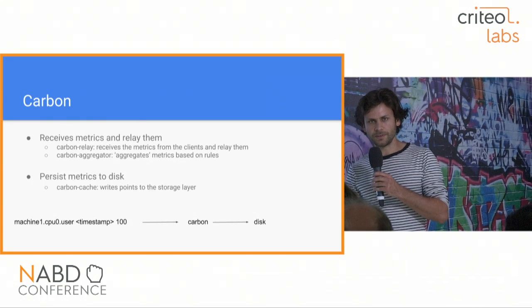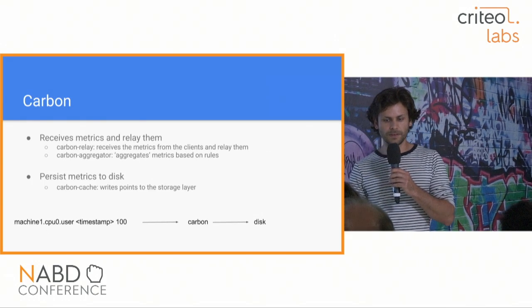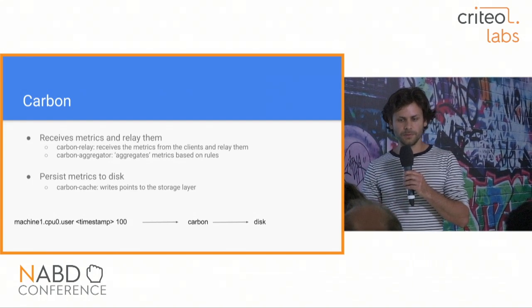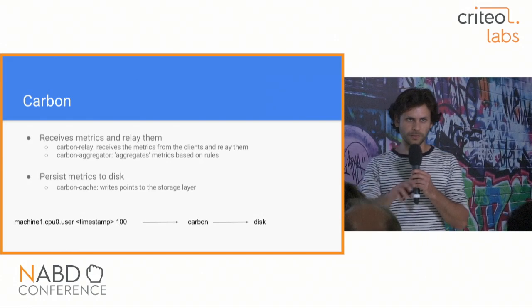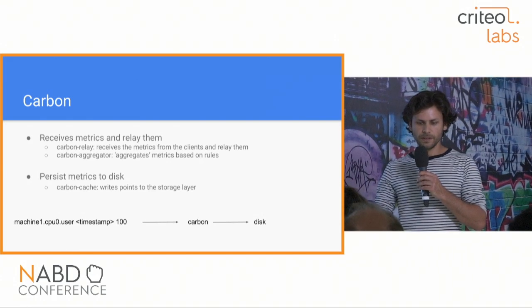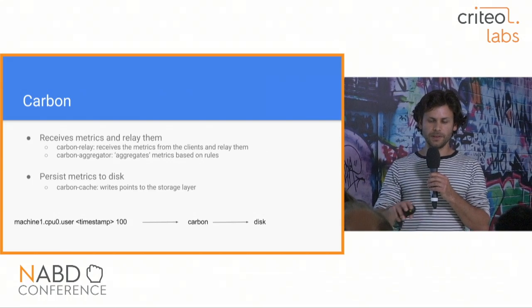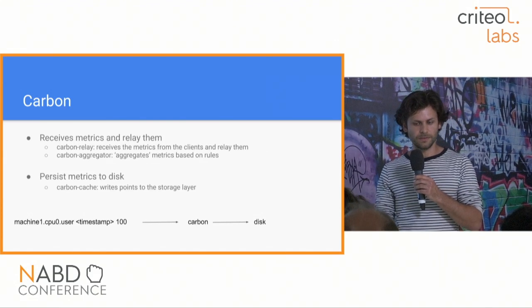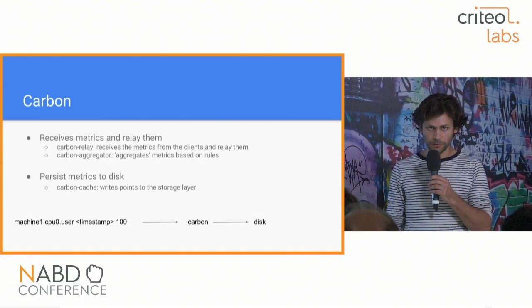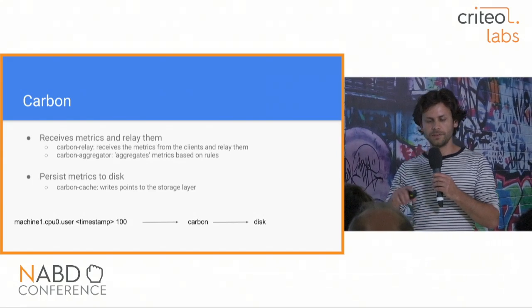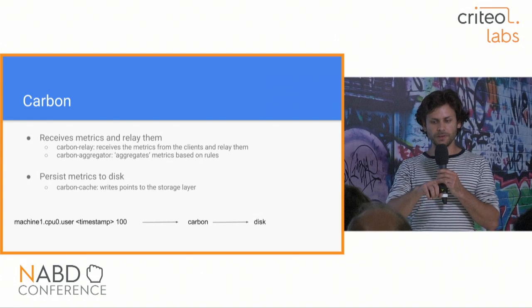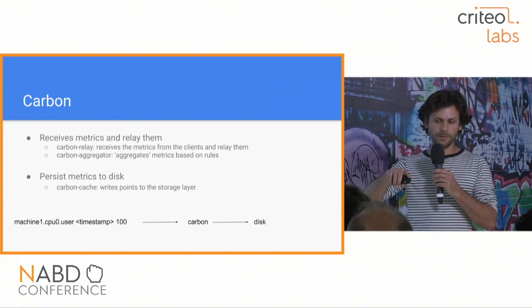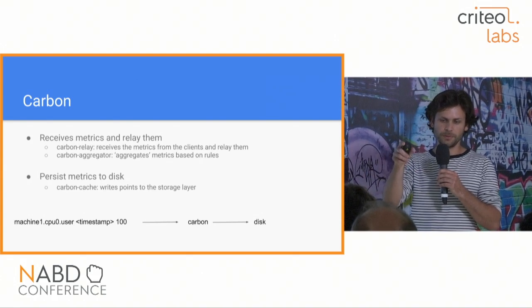The second component is Carbon, which reads points and stores them on disk. There are multiple kinds: Carbon Relay receives points and forwards them, while Carbon Cache reads points and writes them to persistent storage like disk. The protocol is simple — you send lines over TCP or UDP containing the metric name, timestamp, and value. That goes to a Carbon instance, which writes it to disk, and then Graphite Web can read it back.